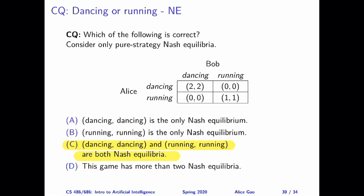In this question, we looked at the dancing or running game, and we want to characterize the pure strategy Nash equilibria of this game. Turns out there are two pure strategy Nash equilibria. One is dancing, dancing, and the other one is running, running.